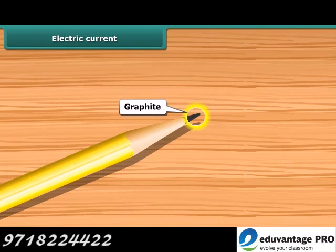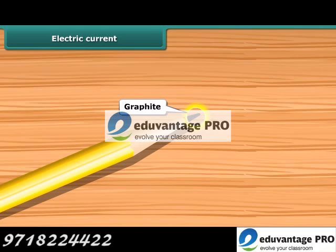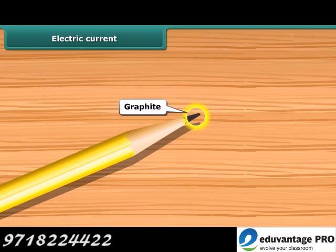Pencil lead is made of graphite. It is a form of carbon. It is a non-metal, but it is a conductor of electricity. It can be tested whether a given material is a conductor of electricity or not.